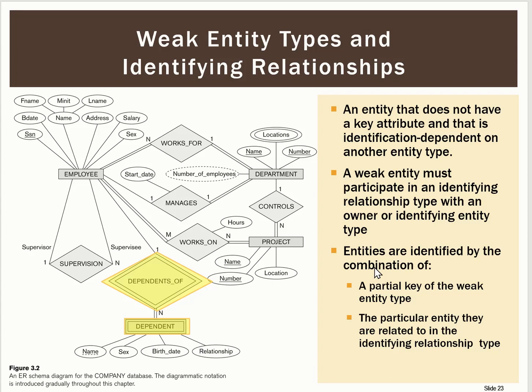Coming back to our company ER diagram, I want to draw your attention to the entity type dependent. Notice that it has two lines around it instead of the usual single line. Those double lines indicate that dependent is a weak entity type. And then I look at the dependence of relationship, and I note that it has two lines around it as well. That's because dependence of is known as an identifying relationship.